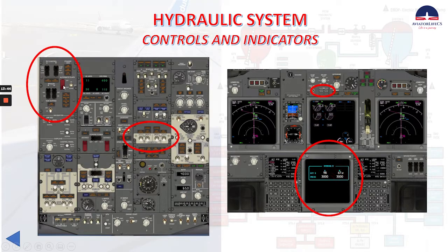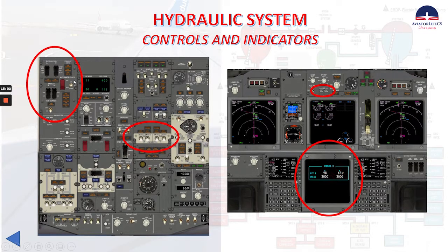Now let's talk about the alternate flaps. This switch has two positions: off and armed. Off is the guarded position and the normal operating position. In arm, it closes the trailing edge flap bypass valve, activates the standby pump, and arms the alternate flaps position switch. The alternate flaps position switch has three positions: off, and down. In the off position, it electrically retracts the trailing edge flaps — leading edge devices remain extended and cannot be retracted by the alternate flap system. Down is spring-loaded to off; when selected momentarily it fully extends the leading edge devices using standby hydraulic pressure, and when held it extends the trailing edge flaps until switch release.